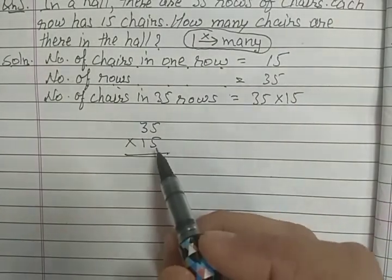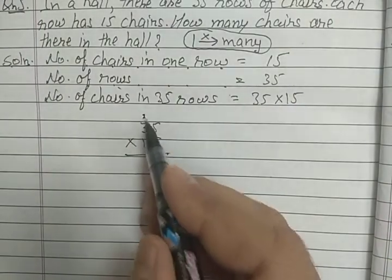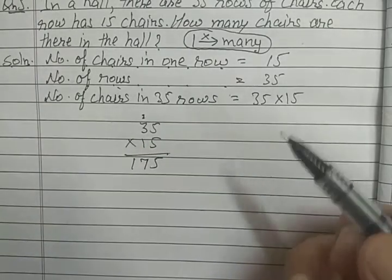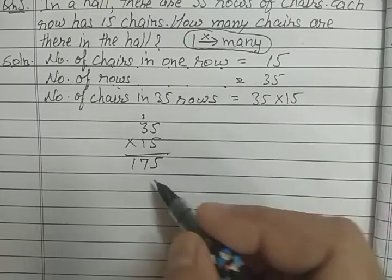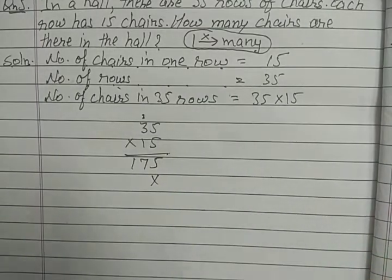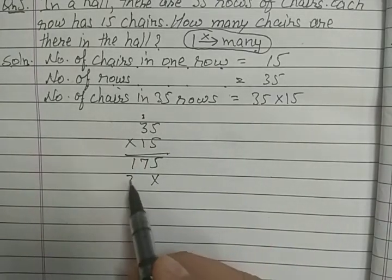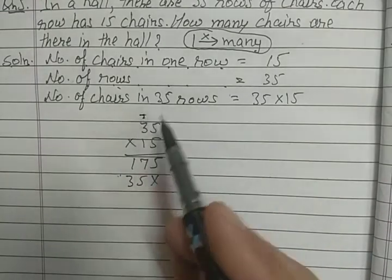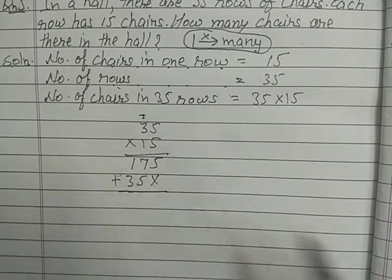First of all multiply by ones place: 5 fives are 25, 2 carry over; 5 threes are 15 plus 2 is 17. Then the second step: multiply by tens place. Before multiplying by tens place we put a cross or zero at ones place. Now multiply: 1 times 35 is 35 — 1 five is 5 and 1 three is 3. The third step is to add these two products.